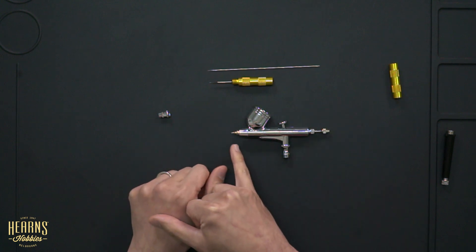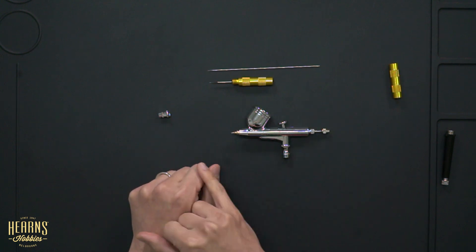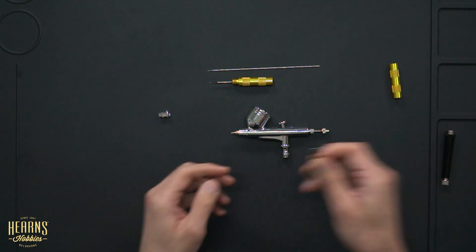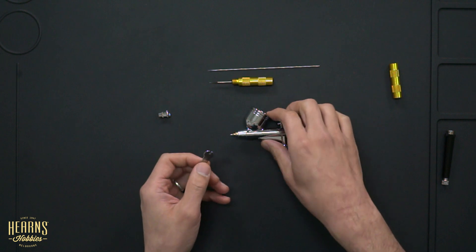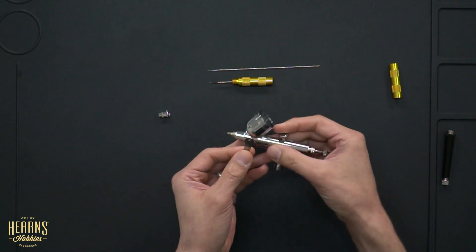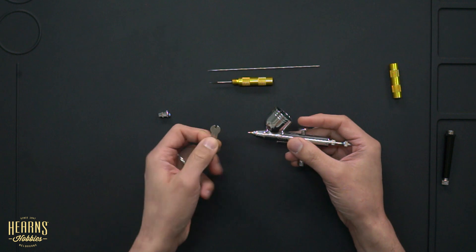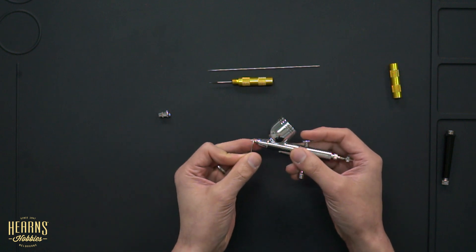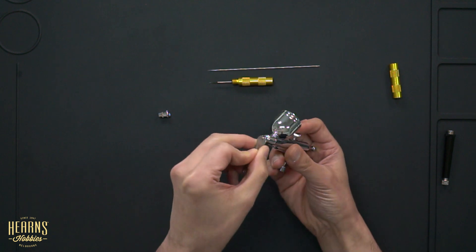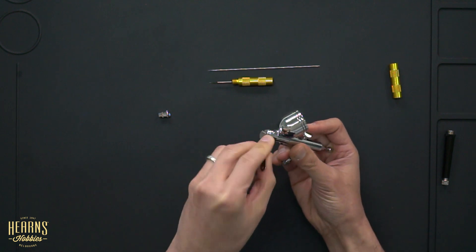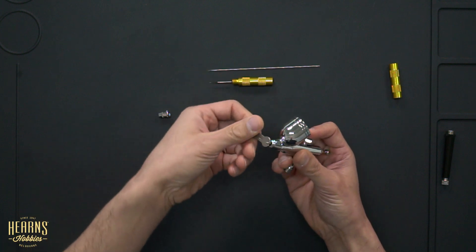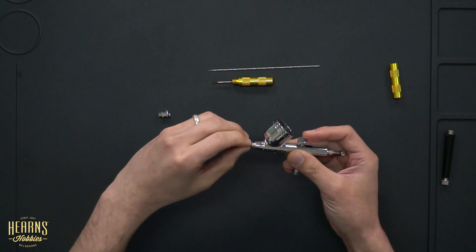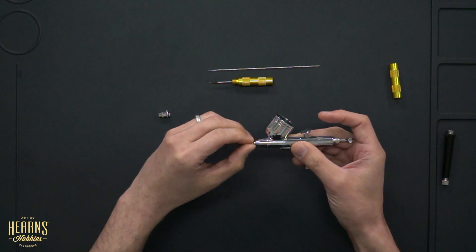Nozzles can vary in slightly different designs on how they attach to the end of the airbrush. This is a fairly common system where it's just screwed in. And with these, you have to be very careful when you remove them. So, there's a little spanner, little square end. There's flat spots on this nozzle. Just to match it up here. And you just spin it anti-clockwise. And then we use a finger to remove the rest of it, just slowly unscrewing it.